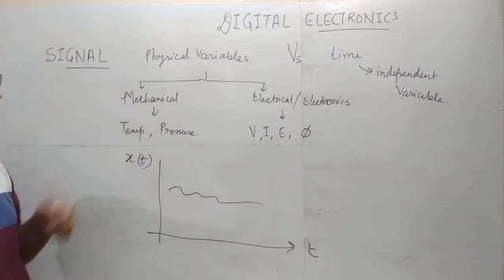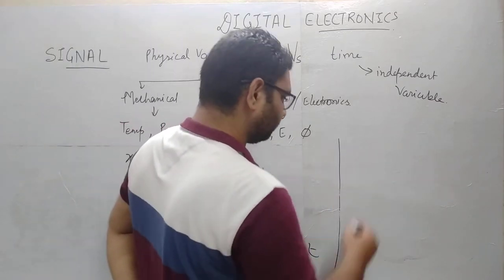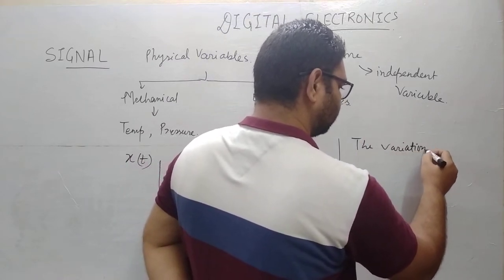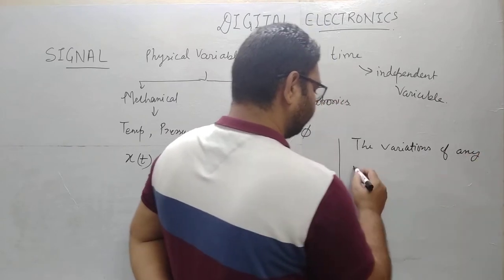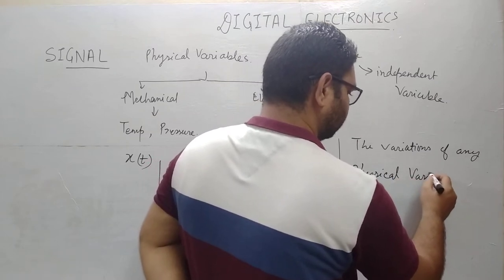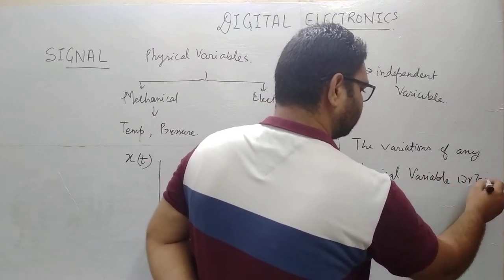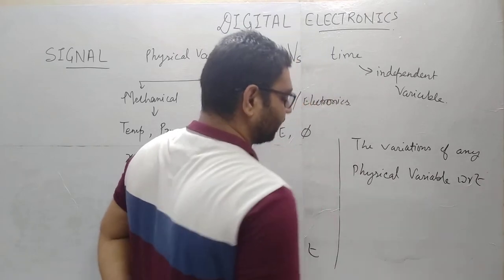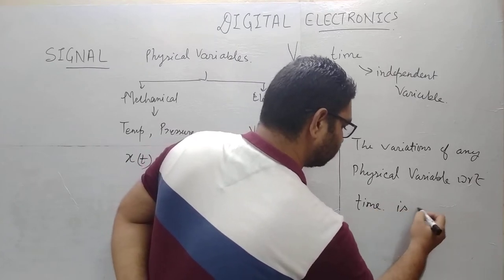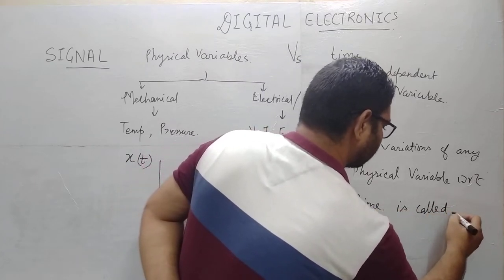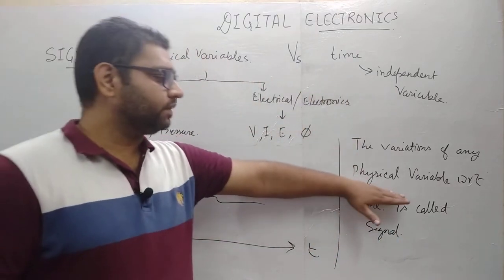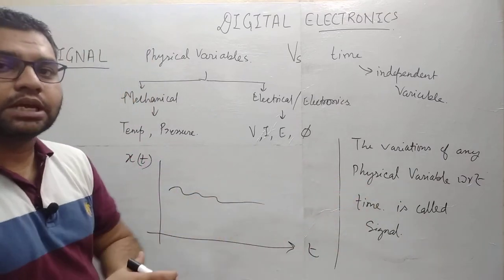If we look at the signal definition: the variation of any physical variable with respect to time — WRT stands for 'with respect to time' — is called a signal. Time is the independent variable, and the physical quantity is the dependent variable.